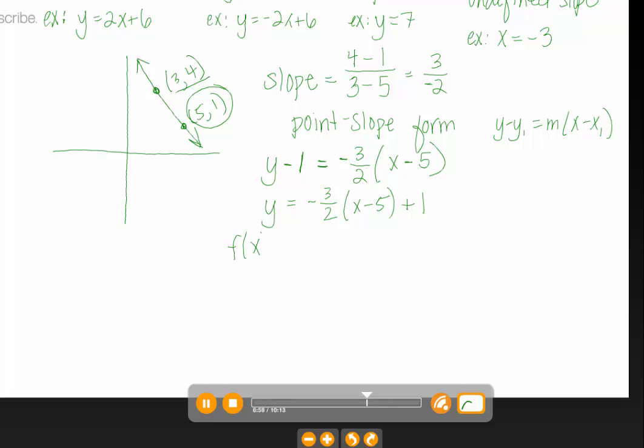Note we could also use function notation. Since lines are functions, we could call that f(x) equals negative 3 halves (x minus 5) plus 1. And in class, we're going to focus on using function notation as much as we can when we're talking about lines as well. So it's nice to get used to that.